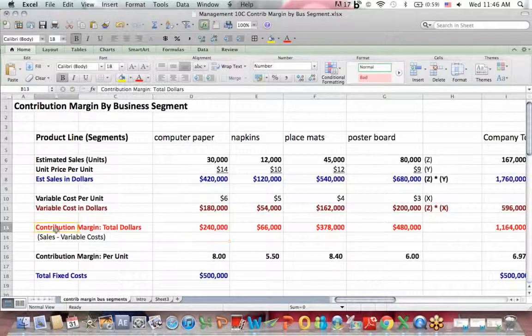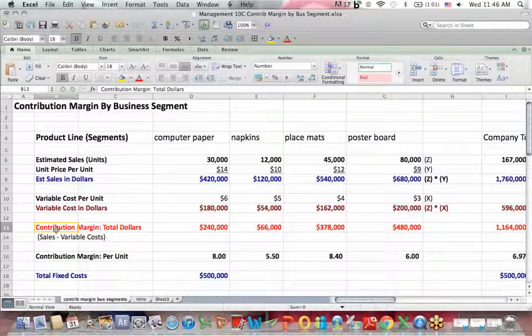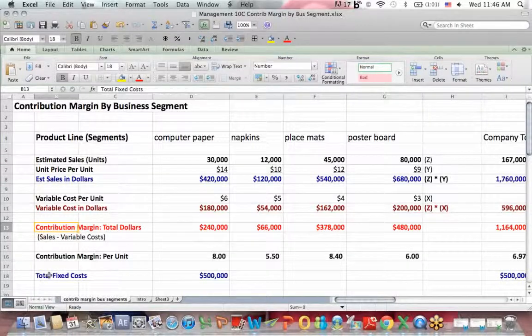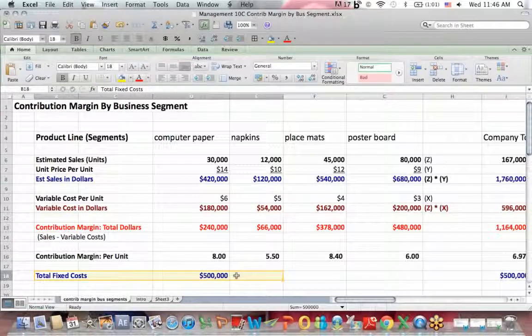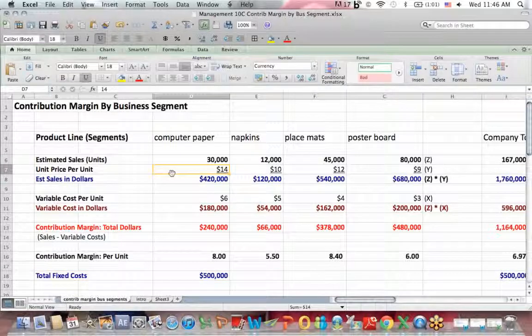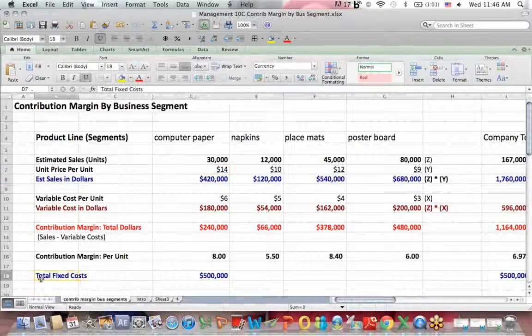And I define contribution margin as going to pay two things. First of all, contribution margin covers fixed costs, and whatever's left over is your profit. Well, for this example, and it's not uncommon, fixed costs are not separated by segment, and you'll see why in a minute.